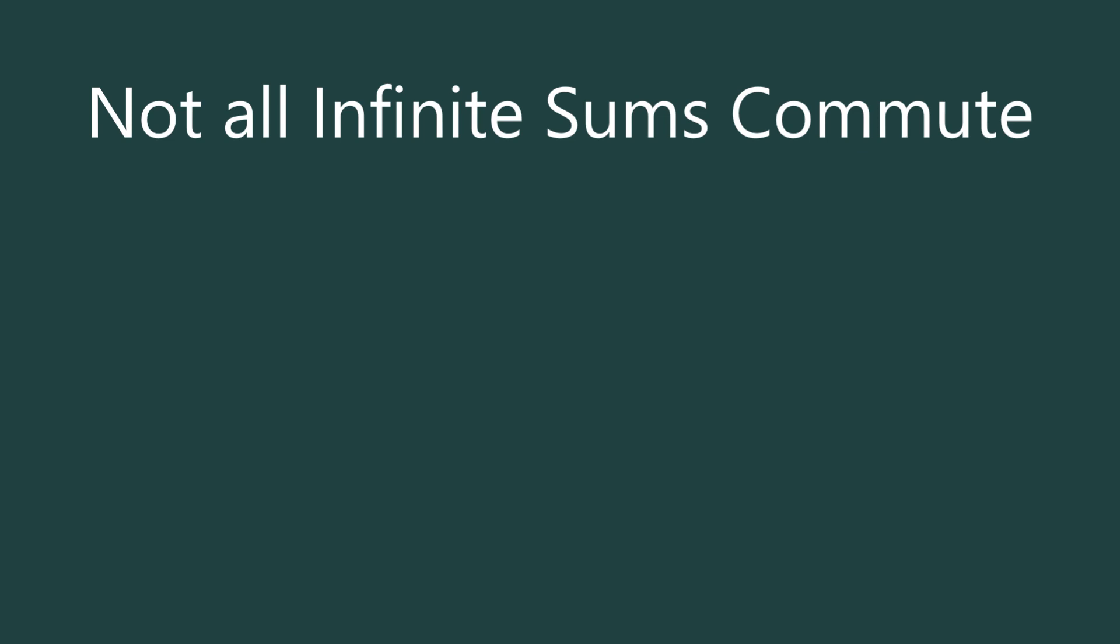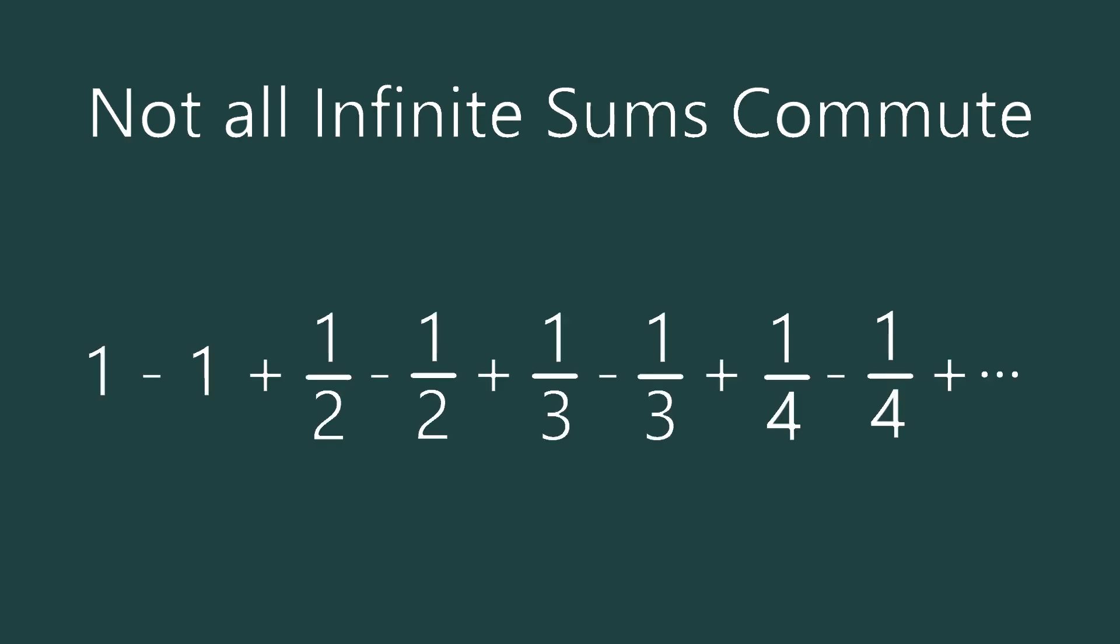For example, consider the sum 1 minus 1 plus 1 half minus one half plus one third minus one third plus one fourth minus one fourth and so on. This sum not surprisingly adds to zero. However, if you take the same exact numbers but add them up in a different order, where we put two positive terms first and then a negative followed by the next two positive terms and the next negative and so on. That is, if we add one plus one half minus one plus one third plus one fourth minus one half plus one fifth plus one sixth minus one third and so on, we get the natural log of two, even though we added up the exact same numbers.